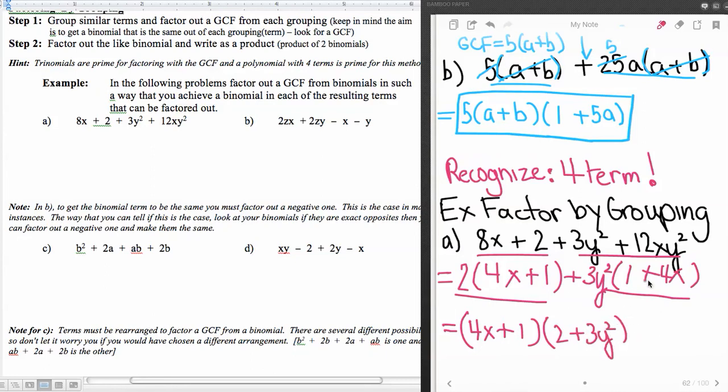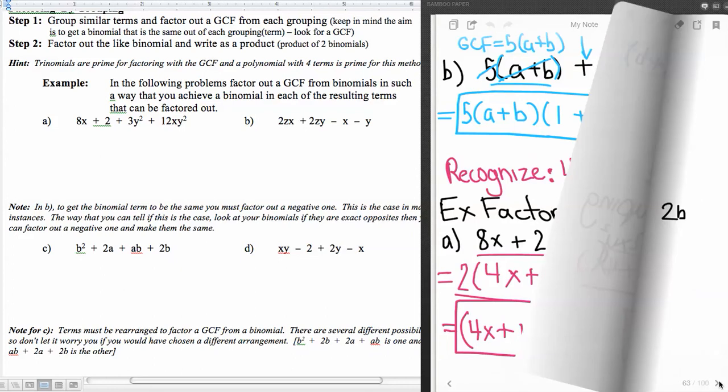And it's okay to write that as (4x + 1) times (3y² + 2) as well, or you can just leave it like that. It really doesn't matter. And there we go. And you see, when we factor by grouping, what we end up with is a binomial times a binomial. Now let's look at another example.